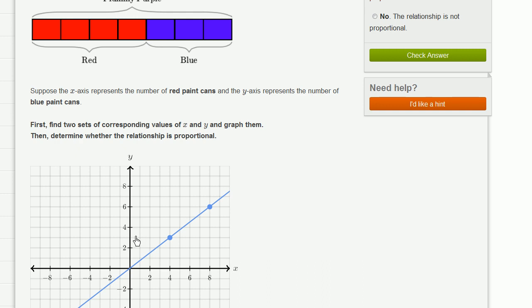Another sign that this is a proportional relationship is that it's a line, and not only is it a line, but it's a line that goes through the origin. And that makes sense. If I have zero red,